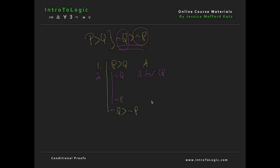Now that we have our antecedent at the top and our consequent at the bottom, we ask ourselves: how can we derive not p given these two assumptions? It turns out this is pretty easy — we can just use modus tollens. We have a conditional and the negation of the consequent, which is not q, and so we can derive not p by modus tollens, lines 1, 2, MT.